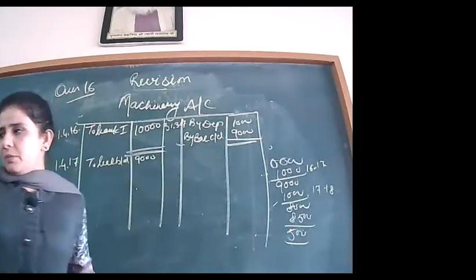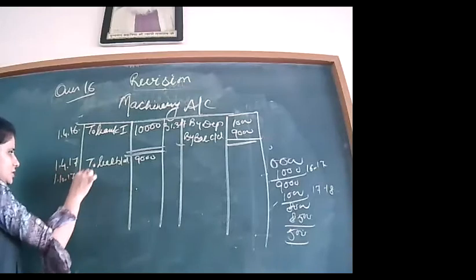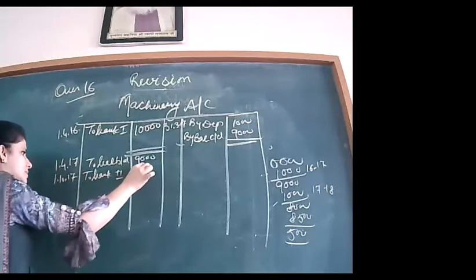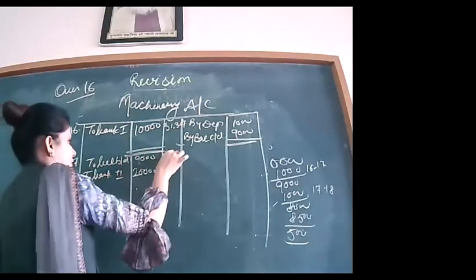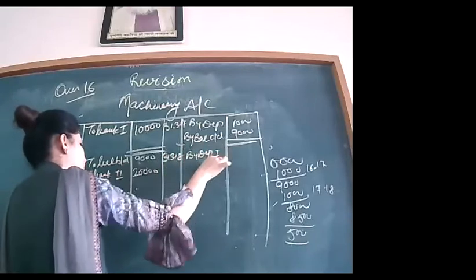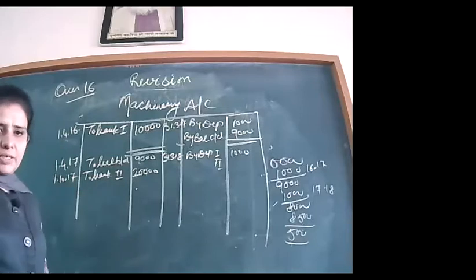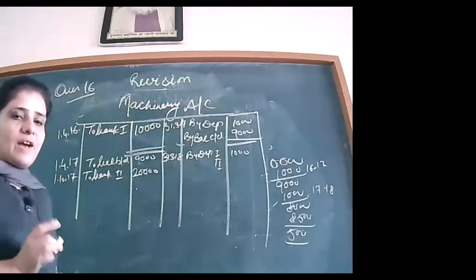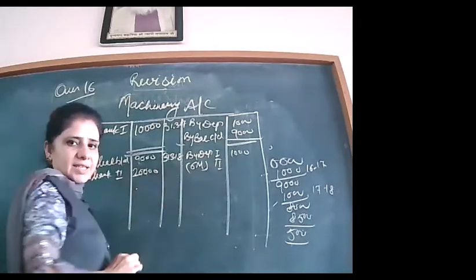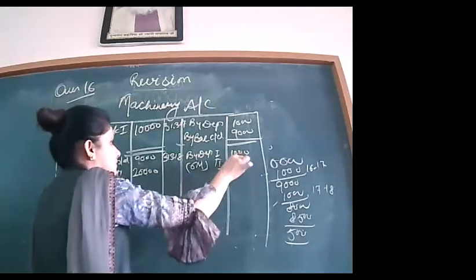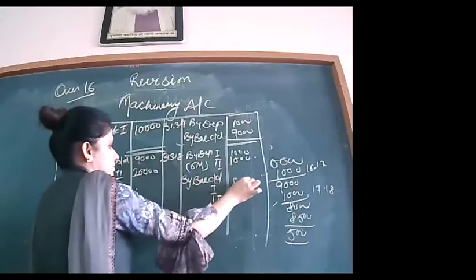In year 2, on 1st October 2017, Machine 2 is bought for ₹20,000 — to Bank. At year-end 31st March 2018, charge depreciation on both: Machine 1 — ₹1,000 (full year); Machine 2 — 10% on ₹20,000 for 6 months only = ₹1,000 (examiner must see '6M' noted). Closing balances: Machine 1 → ₹8,000; Machine 2 → ₹19,000. Total both sides: ₹29,000.